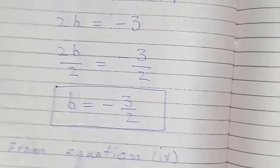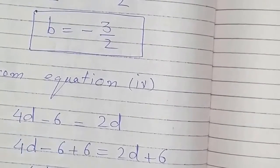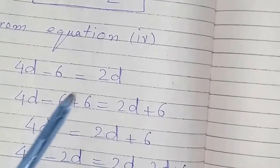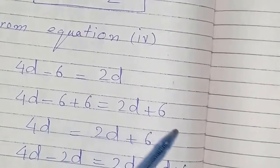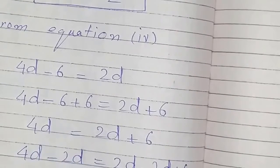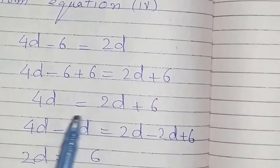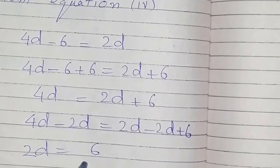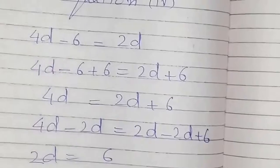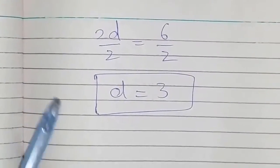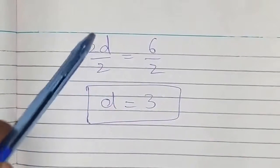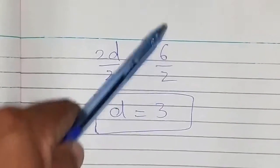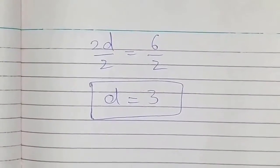From equation 4: 4D minus 6 equals 2D. Adding 6 on both sides, the negative 6 cancels out. Then subtracting 2D from both sides, the 2D on the right cancels out, giving 4D minus 2D equals 6, so 2D equals 6. Dividing both sides by 2, this 2 cancels out and D equals 3. So the final answers are: A equals minus 4, B equals minus 3 over 2, C equals 4, and D equals 3.